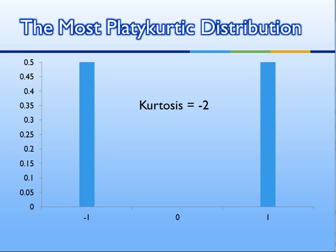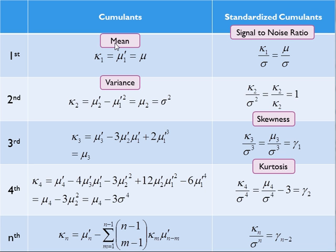This is why the traditional approach to kurtosis doesn't make sense at the extremes — with very low kurtosis, you no longer have that thick-middle, thin-tail pattern. In a way, negative kurtosis refers to the bimodality of the distribution, and the traditional approach makes more sense when talking about leptokurtic distributions. The formula for kurtosis is the fourth central moment divided by the standard deviation to the fourth power — the fourth standardized moment — minus three.